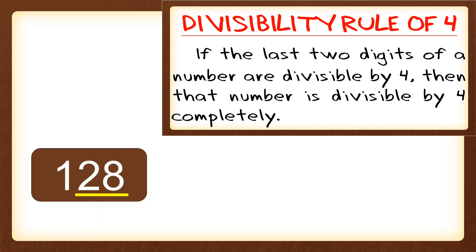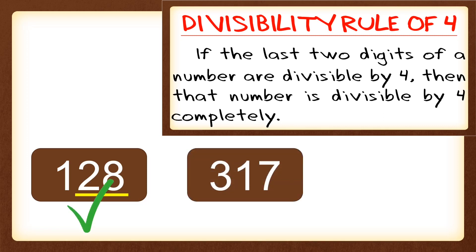Next is 317. The last two digits of 317 are 17. We determine if 17 is a multiple of 4 or divisible by 4. Can you guess? It is not a multiple of 4. So 317 is not divisible by 4.